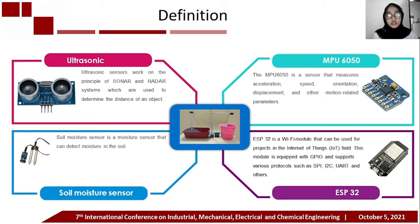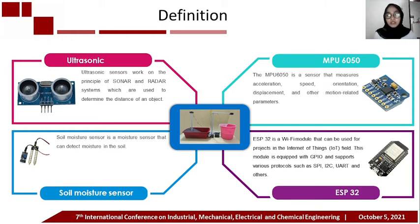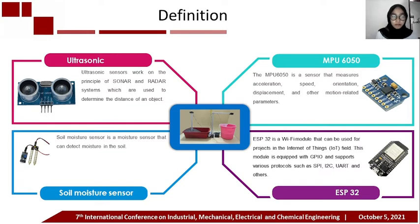Next, the ESP32 is a Wi-Fi module that can be used for projects in the Internet of Things field. This module is equipped with GPIO and supports various protocols such as SPI, I2C, UART, and others. Next, a soil moisture sensor is a sensor that can detect moisture in the soil.